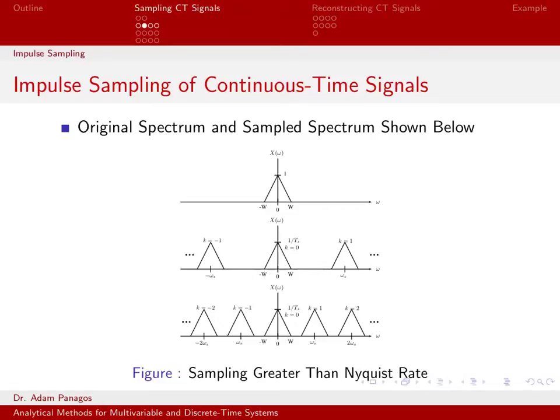We just developed a nice equation that says when we perform impulse sampling, the spectrum of the sampled signal consists of an infinite collection of shifted versions of our original spectrum. Let's take a look at some examples of what that means.